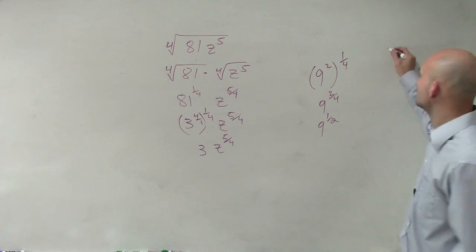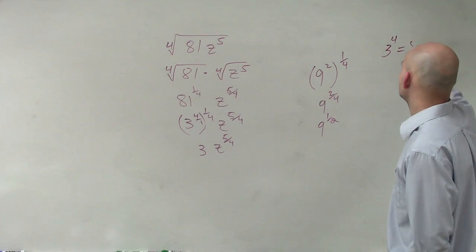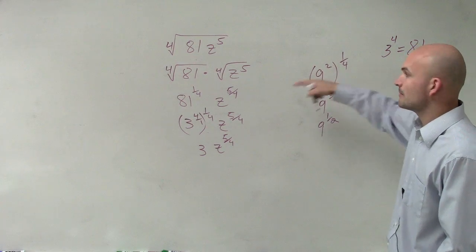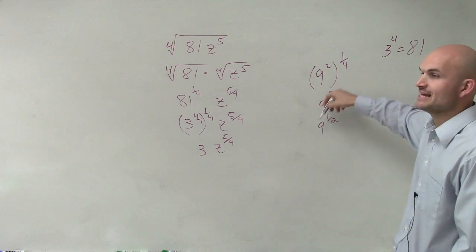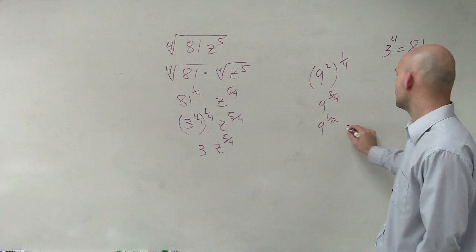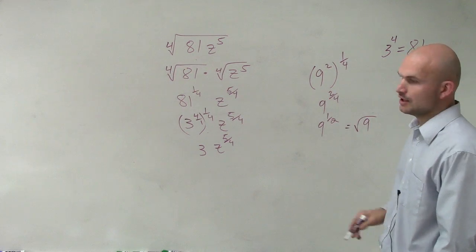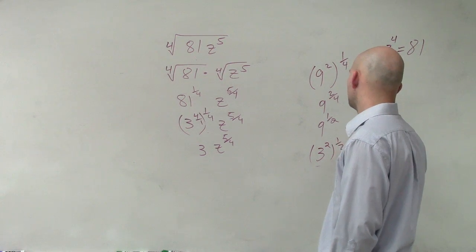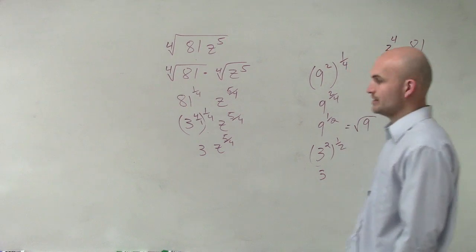3 to the 4th power equals 81, just like 9 to the second power equals 81. And then you have 9 to the 1 half power. Well, that equals the square root of 9. Or you could rewrite this again as 3 squared to the 1 half power, and you'd still get 3, which is your answer.